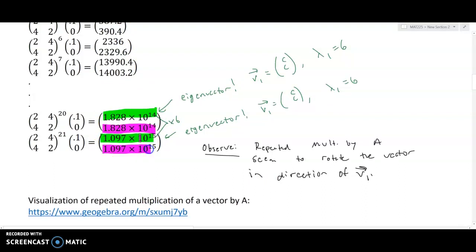And similarly, if you multiply 1.828 times 10 to the 14th by six, you get 1.097 times 10 to the 15th. So let's just spend a moment visualizing this before we get ahead of ourselves.